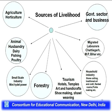Tourism can be linked with different sources of livelihood — agriculture, horticulture, animal husbandry, dairying, fisheries, and poultry are important sources. Small-scale industries, mini hydropower, and forestry also attract some tourists. Government sector, business, migrated laborers from Chhattisgarh, MP, and Bihar, household industries like stone cutting, traditional art and craft, rented rooms, and pickle making are all important livelihood sources for local people.